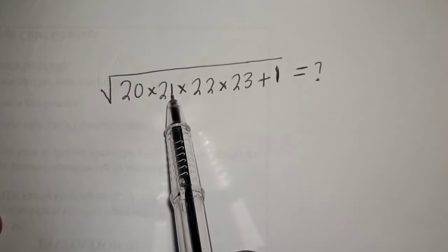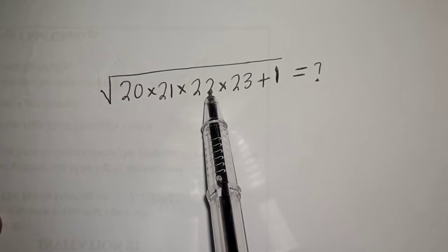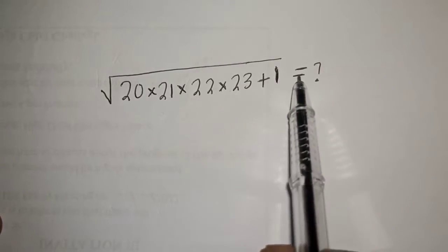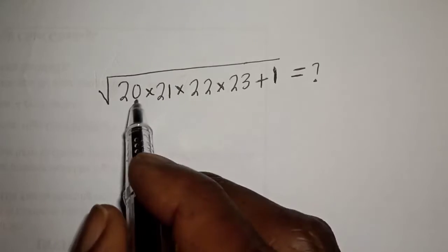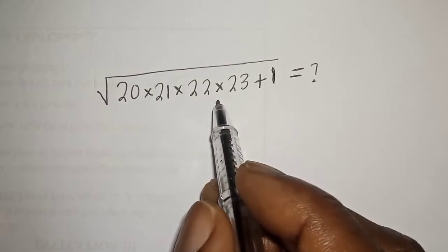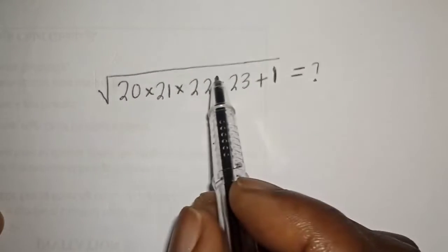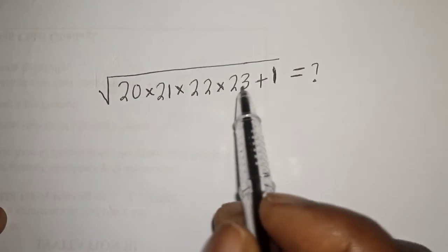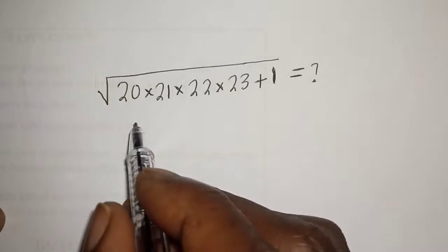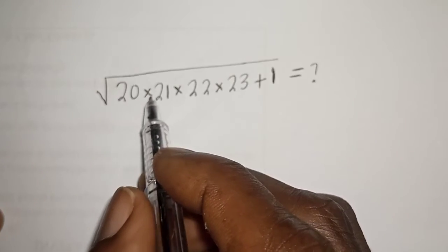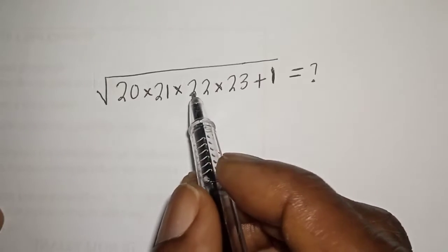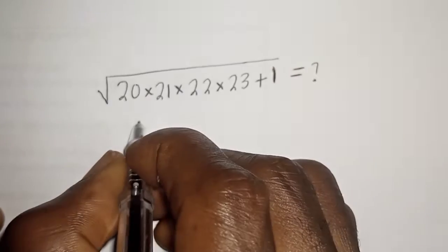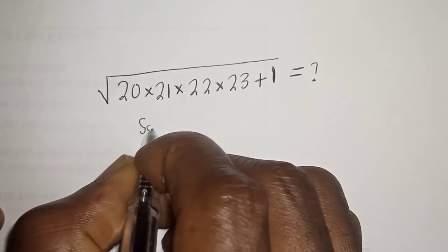Square root of 20 multiplied by 21 multiplied by 22 multiplied by 23 plus 1 is equal to what? Hi everyone, welcome to my class. In this classroom we want to simplify this nice math problem. Please don't forget to like, share, comment and subscribe.